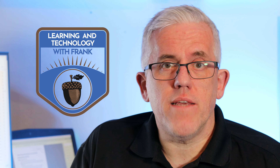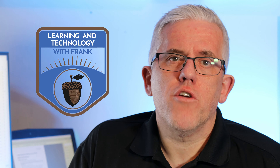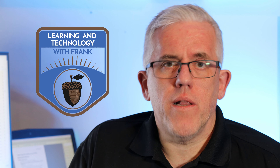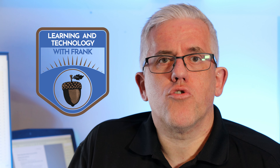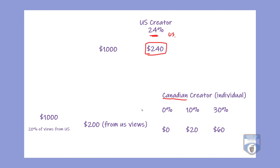You're going to say you're a Canadian citizen, so you're going to fill out the form as a Canadian citizen, and you're going to claim a tax treaty. And what that's going to allow you to do is pay between zero and 30% tax withholdings on just the US views for your channel. So this can be significant.